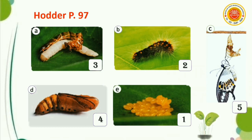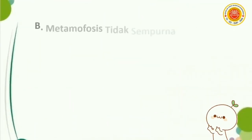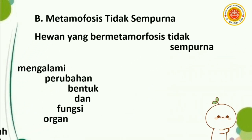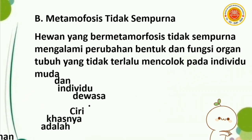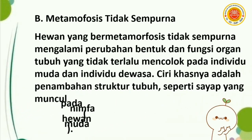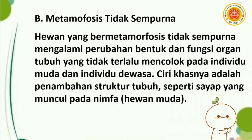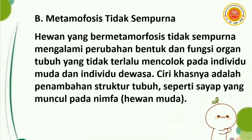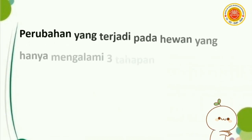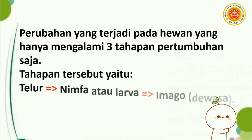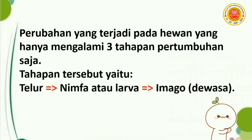Hodder Science sudah selesai. Kita lanjut ke buku EPUB halaman 30, bagian B: metamorfosis tidak sempurna. Hewan yang bermetamorfosis tidak sempurna mengalami perubahan bentuk dan fungsi organ tubuh yang tidak terlalu mencolok pada individu muda dan individu dewasa. Ciri khasnya adalah penambahan struktur tubuh seperti sayap yang muncul pada nimfa atau hewan muda. Perubahan yang terjadi hanya melalui tiga tahapan: telur, nimfa atau larva, lanjut ke imago atau dewasa.